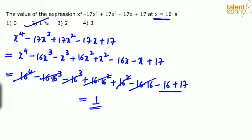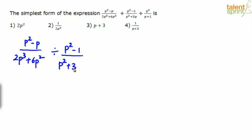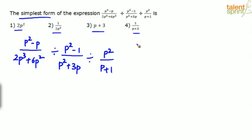The next question: simplify the expression (p² - p) / (2pq + 6p·p²), divided by (p² - 1) / (p² + 3p), followed by division by p² / (p + 1). We have to simplify this. The options are: 2p², 1/(2p²), p + 3, 1/(p + 3).